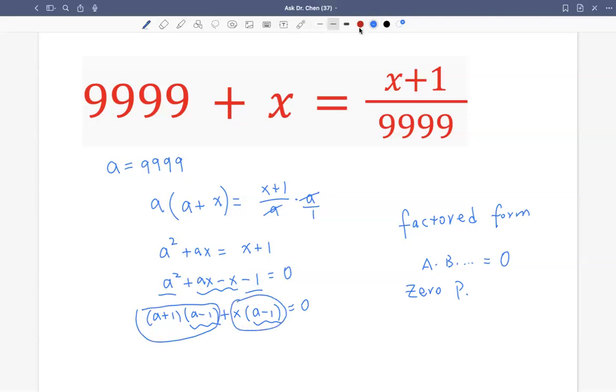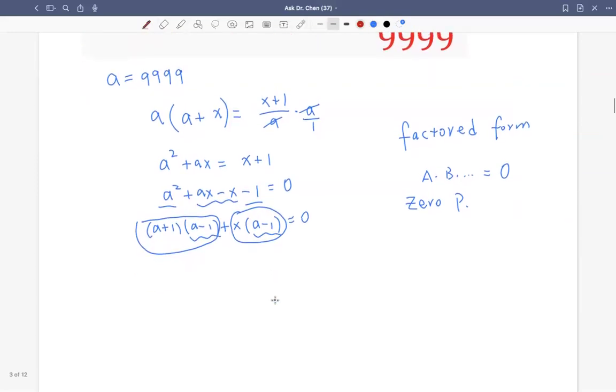So we factor out a minus 1. Then the first group is left with a plus 1. The second group is left with a plus 1. So now we're in a factored form.